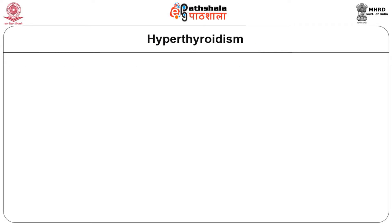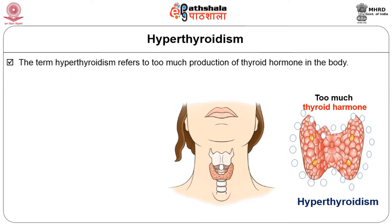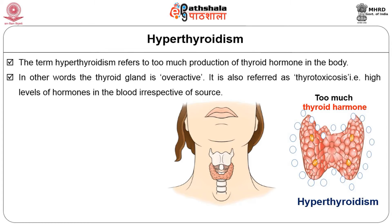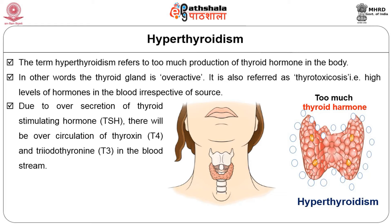Let us understand what happens when the thyroid gland secretes too much hormone. The term hyperthyroidism refers to too much production of thyroid hormone in the body — the thyroid gland is overactive. It is also referred to as thyrotoxicosis, meaning high levels of hormone in the blood irrespective of the source. Due to over secretion of thyroid stimulating hormone (TSH), there will be over circulation of thyroxine (T4) and triiodothyronine (T3) in the bloodstream.